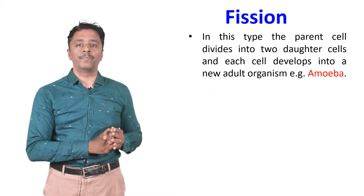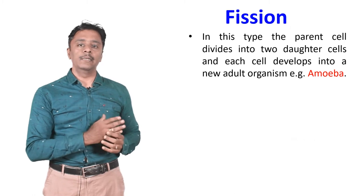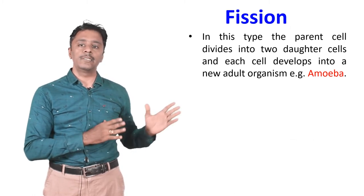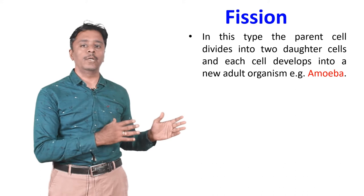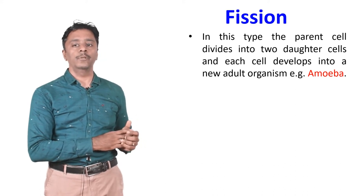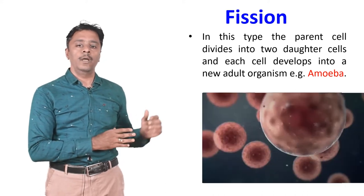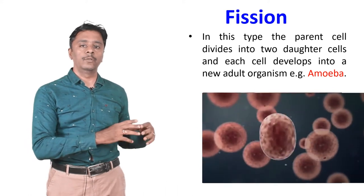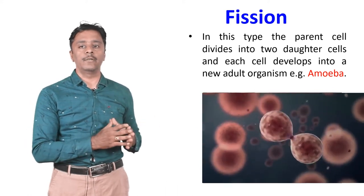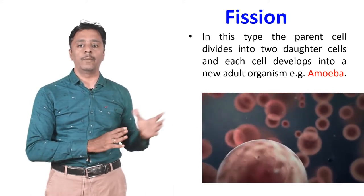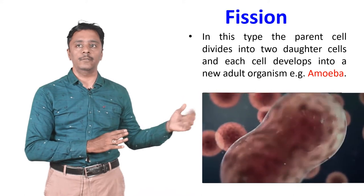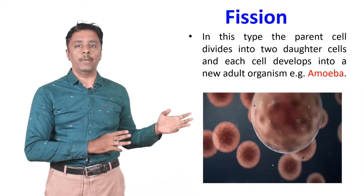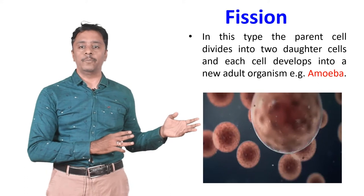The next one is fission. In this type, the parent cell divides into two daughter cells and each cell develops into a new adult organism. Example: amoeba. We are going to see a video of how an amoeba undergoes fission to form two separate cells. We can see an amoeba dividing itself into two by means of the fission process.